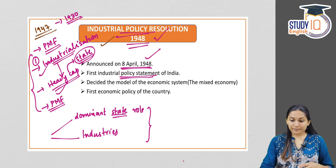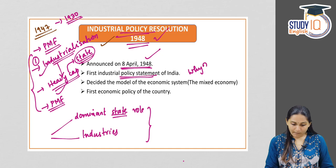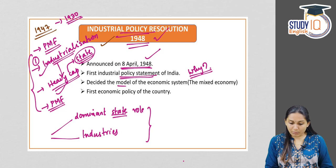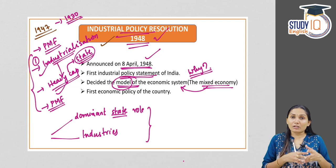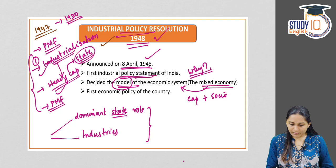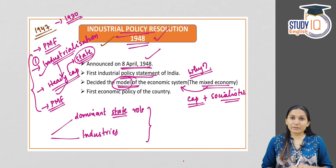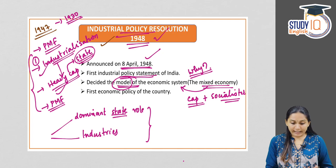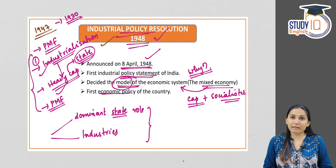Why is this very important? There are two reasons. First, it decided the model of economic system — India adopted a mixed economy from this industrial policy. A mixed economy is a combination of both capitalistic and socialistic elements. Second, it was also the first economic policy of the country. Due to these two reasons, this is very important and relevant.